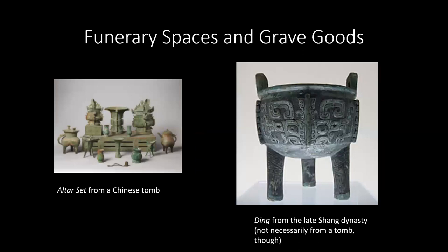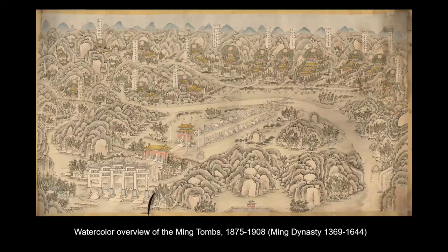For funerary spaces and grave goods, we have Chinese examples. A ding is the cauldron-style form seen here — not necessarily from a tomb, but used for ritualistic purposes; one could light a fire under it and heat liquids. The altar set, which I think is from the Metropolitan Museum, is the sort of thing that may have been buried in a tomb for use in the afterlife by the deceased. Finally, we have a watercolor overview of the Ming tombs from outside of Beijing, which still exists. As you'll see in the textbook, there are still remaining guardian animals and some of the gates visible. Many of these tombs have not been excavated, so there is more to come.